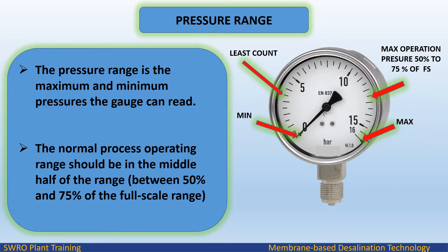Pressure Range: The pressure range is the maximum and minimum pressures the gauge can read. The normal process operating range should be in the middle half of the range, between 50% and 75% of the full scale range.